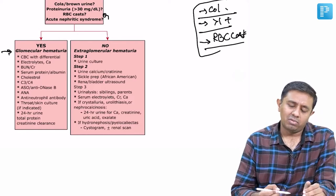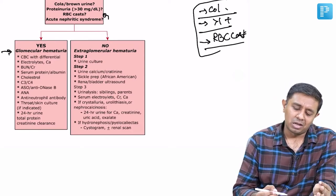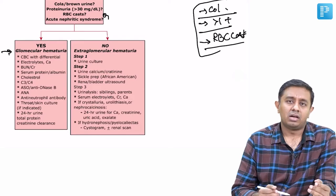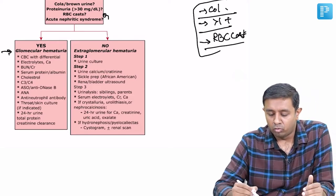We like to look at the CBC with differential count, we look at the electrolytes, creatinine, and if you are looking at nephrotic syndrome as the dominant presentation, you would like to look for triglycerides.